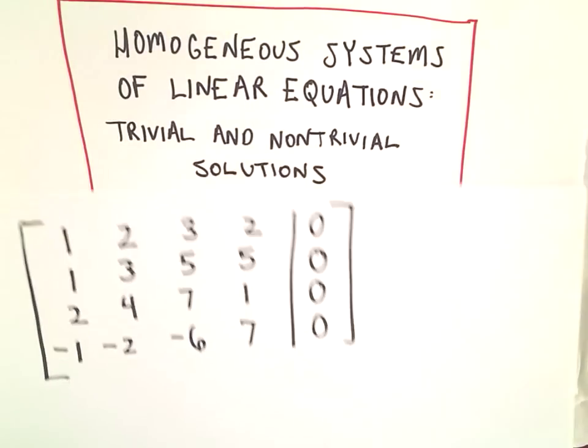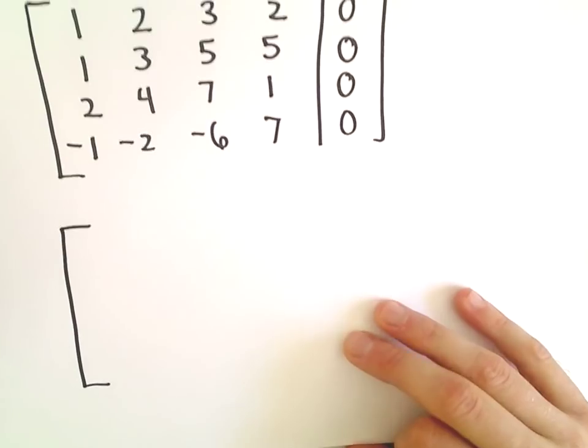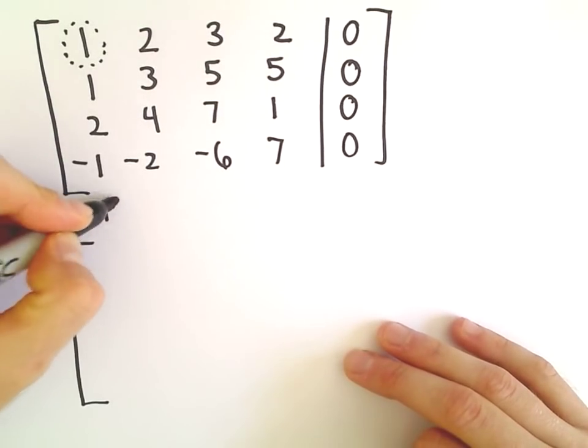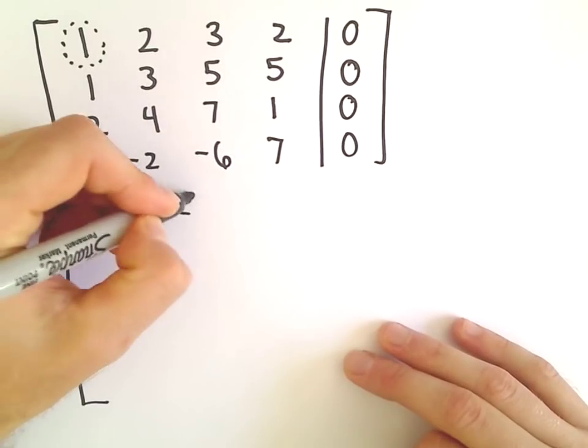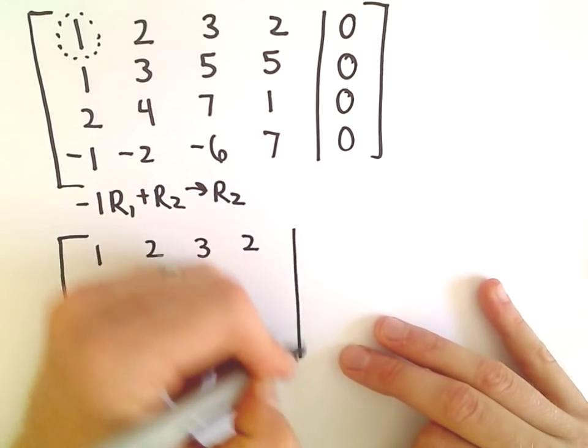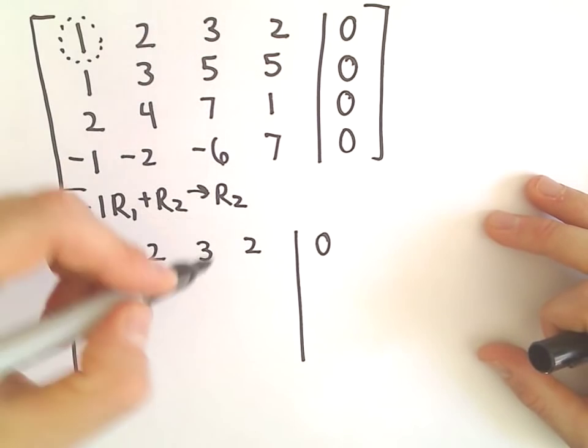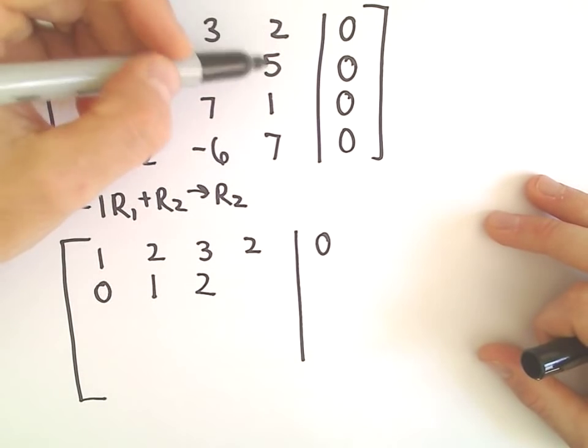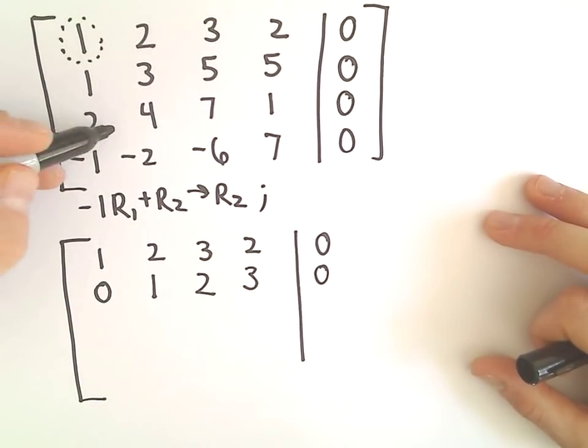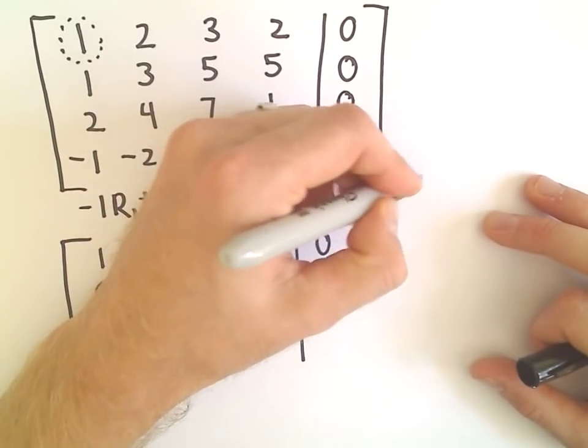All righty, so let's start doing our row reduction. So maybe we can do these a step at a time. I want a 1 in the top left corner, which we already have. So I want to get 0s everywhere else in that first column. I'm going to take negative 1 times row 1 and add that to row 2 to get my new row 2. So I'm going to leave the first row alone: 1, 2, 3, 2, and 0. So negative 1 plus 1, that's 0. Negative 2 plus 3, that's 1. Negative 3 plus 5 is 2. Negative 2 plus 5 is 3. And again, we've got a 0. To get a 0 in the third row, first column, it looks like we can do negative 2 times row 1,